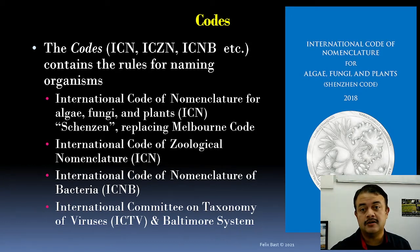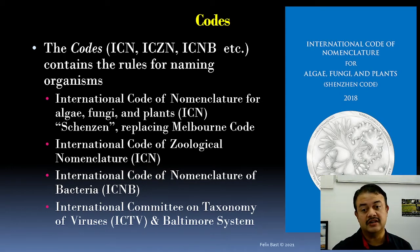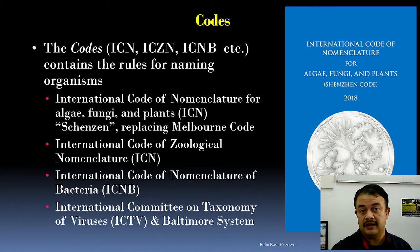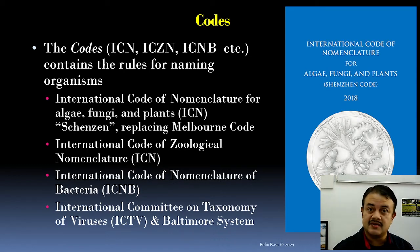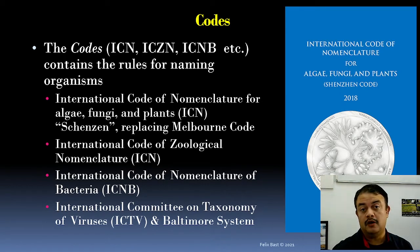Similarly, taxonomists have their own codes. For example, ICZN — International Code of Zoological Nomenclature — and ICNB. ICN is what plant biologists use, including mycologists working on fungi, lichens, and mushrooms. ICNB means International Code of Nomenclature of Bacteria. For viruses there is ICTV — International Committee on Taxonomy of Viruses — and the Baltimore system. For bacteria, Bergey's Manual of Systematic Bacteriology is a very important reference book.